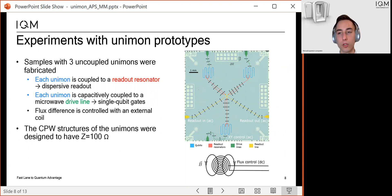In the samples, each of the Unimons was coupled to an individual readout resonator, which made it possible to use dispersive readout. Each of the qubits was also coupled to an individual microwave driveline. Finally, we used an external coil to control the flux difference.